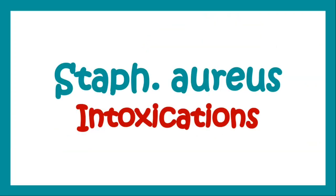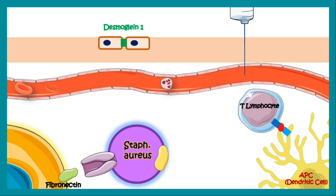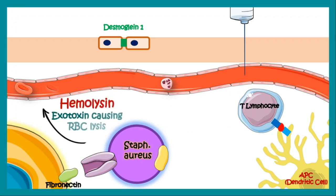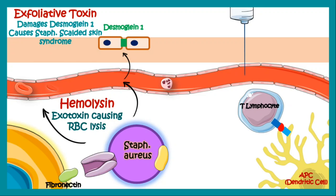Staphylococcus aureus produces a toxin known as hemolysin, which causes lysis of RBCs. It also produces a toxin known as exfoliative toxin, which damages the Desmoglein-1 protein present in the cells of skin, which forms cell junctions of the skin cells, and this causes scalded skin syndrome. Apart from that, it also produces a fibronectin binding protein on its surface, which binds to the fibronectin present on the extracellular matrix, and which helps in adherence of Staphylococcus aureus.